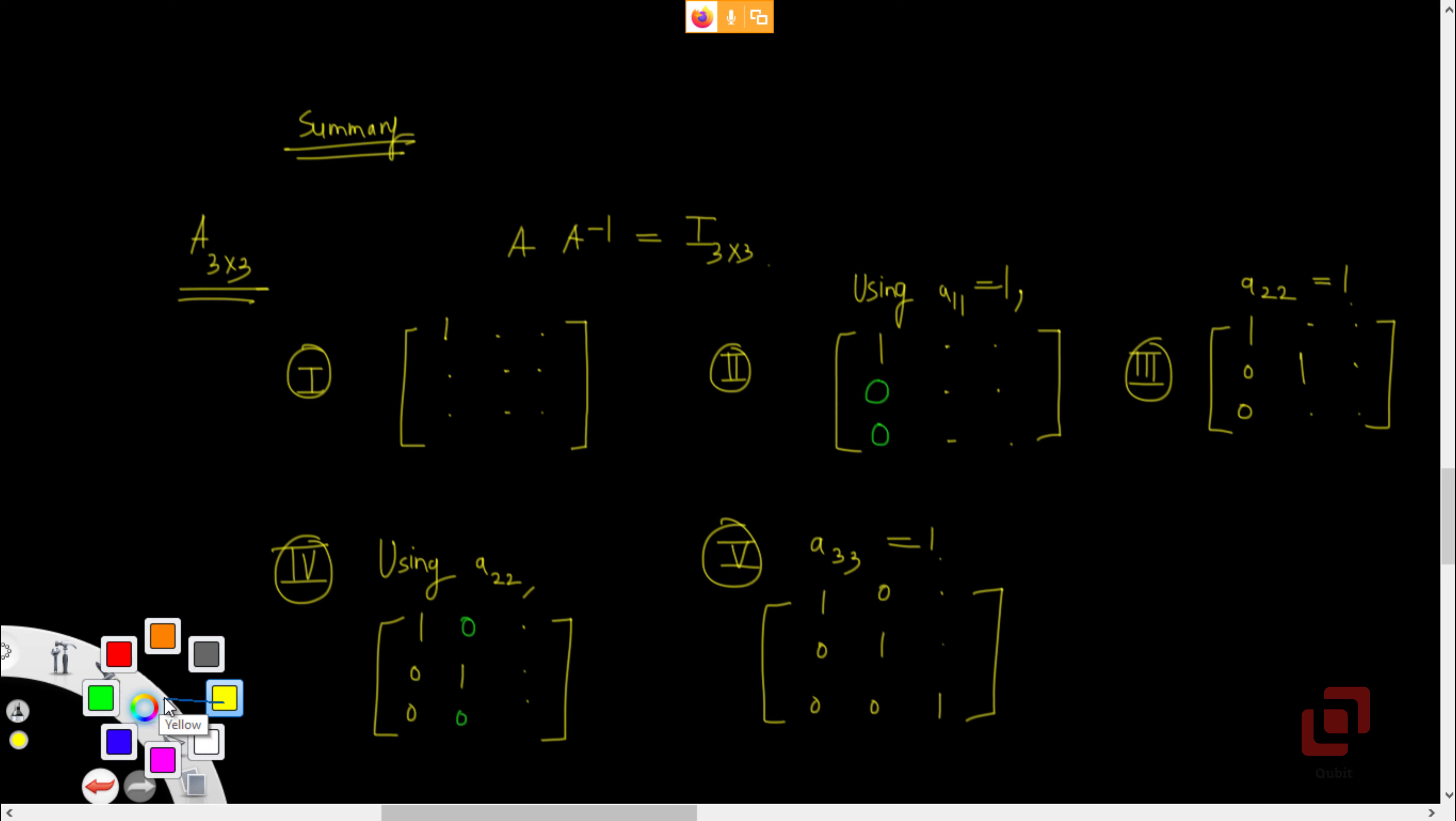And in the last step, step 6, using A33, which is equal to 1, we get 1, 0, 0, 0, 1, 0 as it is, this entry 1. The other two elements in the third column should be 0. So, this is how we step by step convert the given matrix A to an identity matrix.